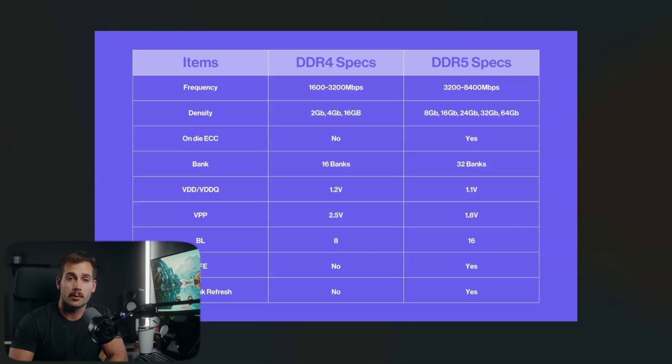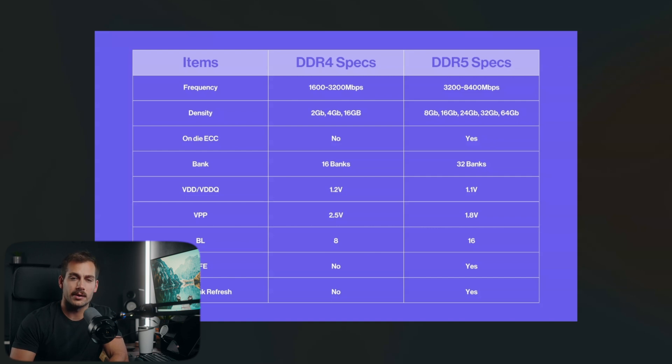I'm referring to a diagram here — we're going to put this on screen for you guys to see in case you wanted to screenshot it or pause it. DDR4 has a megatransfer rate of approximately 1600 up to around 3200 as the top-end speed. Impressively, DDR5 starts out at around 3200, so DDR5 is starting at the kind of maximum speed of DDR4. In short, DDR5 is about twice as fast as DDR4.